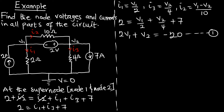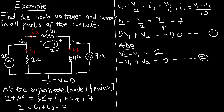Now we need Equation 2. We can get it by considering the voltage measured between node 1 and node 2. Pay attention to the sign — here it's negative, and this is positive, meaning V2 is of higher magnitude than V1. So the measurement is V2 − V1 = 2 volts. Rearranged, our Equation 2 is: −V1 + V2 = 2. Now we have two equations in terms of V1 and V2.